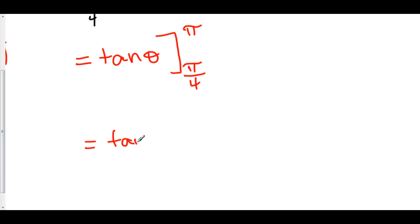We've got tangent of π minus tangent of π/4. And because tangent is sine over cosine, we've got sine π over cosine π. Sine of π is 0, cosine of π is negative 1, 0 over negative 1 gives us 0, minus tangent of π/4 is 1.